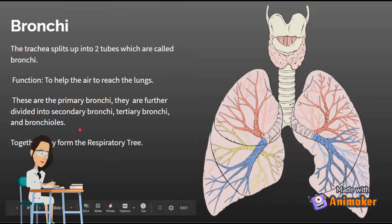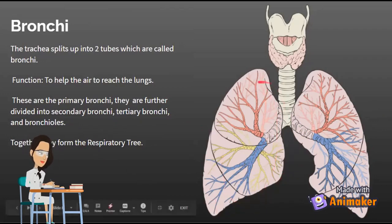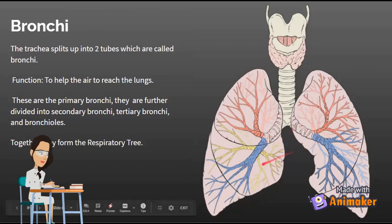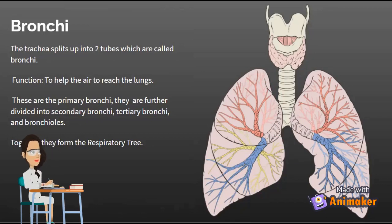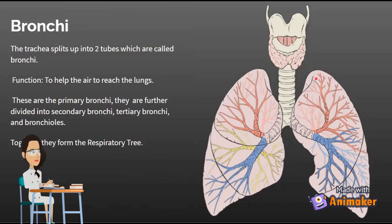How do you tell which is the secondary bronchi, tertiary bronchi, and bronchioles? The bronchi looks like trees. I like to think of the secondary bronchi as the trunks of the tree. The tertiary bronchi are like the branches. And then we have the bronchioles, which are like the little tiny twigs on the tree. Together, they form the respiratory tree.